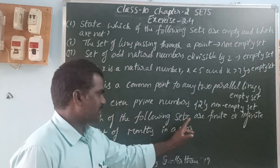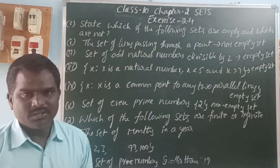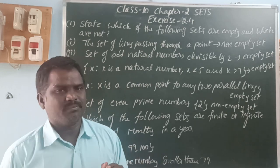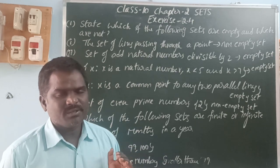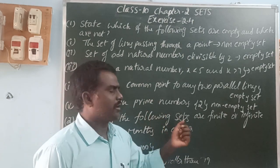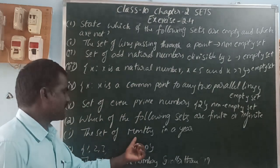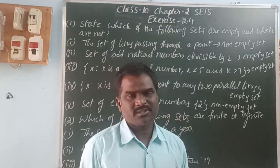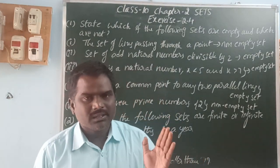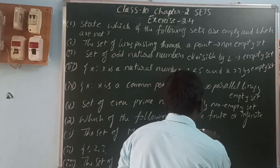Which of the following sets are finite or infinite? A finite set means a set having countable elements. For example, the set of months in a year — in a year there are twelve months, and those months are countable, so it is a finite set.